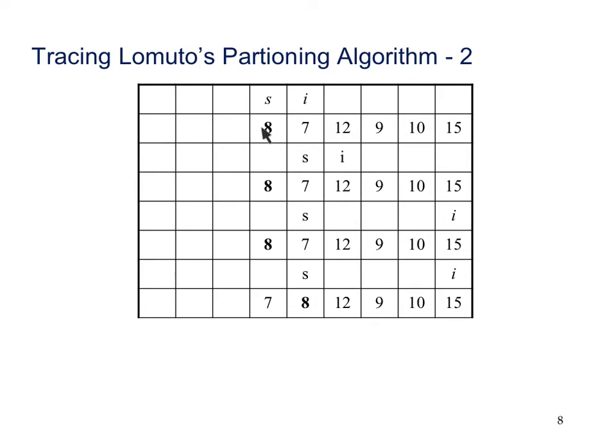And so now our partitioning element is going to be 8. And we'll let i. Again, i get set to left plus 1. So s plus 1. We look again at 7 is less than 8. So we can increment s. We swap 7 with itself. And then we increment i.